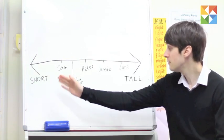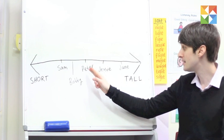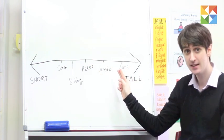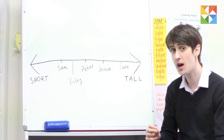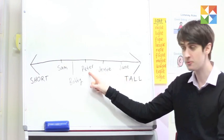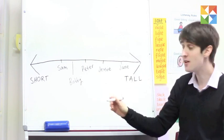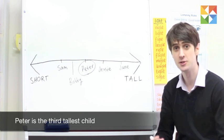The order of our children now, from shortest to tallest, is Sam, Bobby, Peter, Jesse, Jane. Now the question asks us to find the third tallest child. So we count backwards: one, two, three. And we can find out that Peter is the third tallest child.